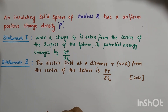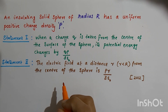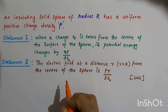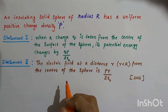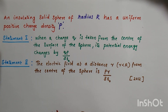Hello everyone. In this video we are going to discuss a previous year JEE question which was actually asked in the year 2012, from the chapter electrostatic potential and capacitance, class 12 physics. Let us see the question first.